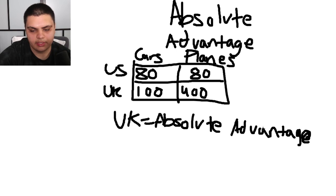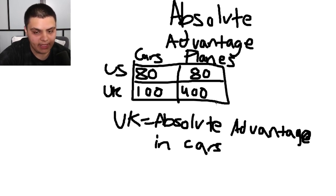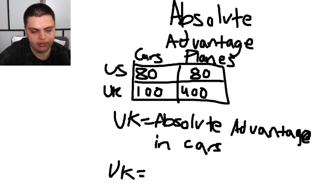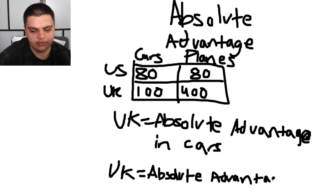The UK can make more cars. Now who has the absolute advantage in planes? The UK also has the absolute advantage in creating planes. So the UK has an absolute advantage in both goods. This is very basic and simple to understand, but again, it's an outdated concept not really used in trade calculations.